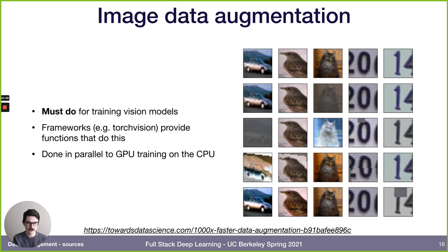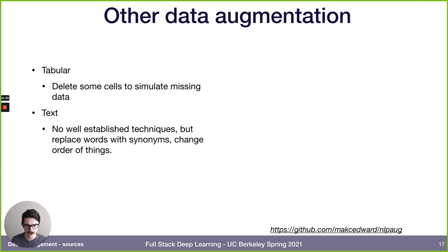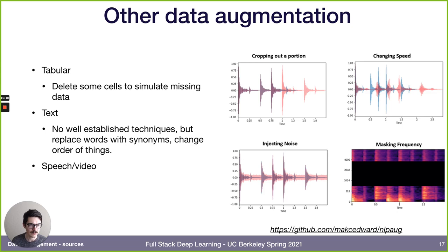For tabular data, you can simulate missing data by blanking out some cells. For text data, there aren't well-established techniques, but you could replace words with synonyms or change the order of things. For speech and video (temporal data), you can crop portions, change speed, inject different types of noise, or mask out different frequencies. For video, you can also do the same augmentations as images.